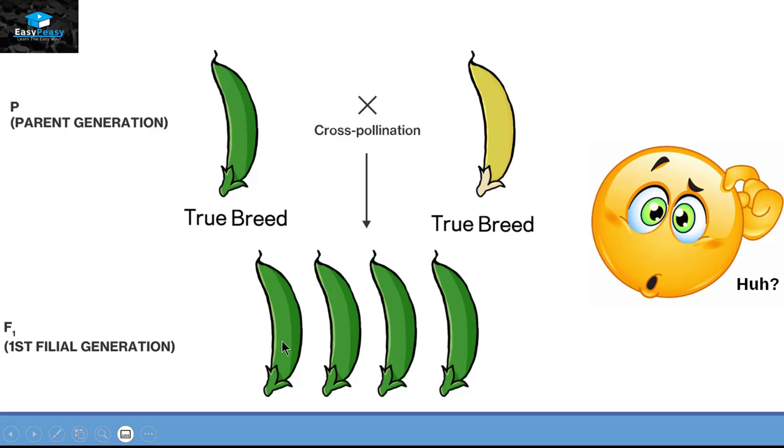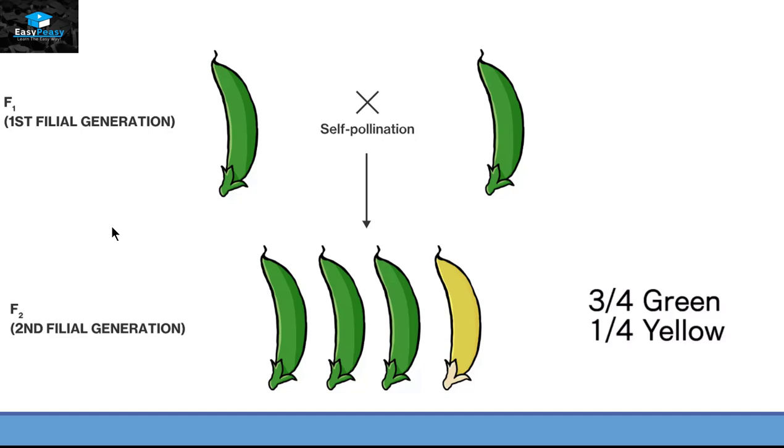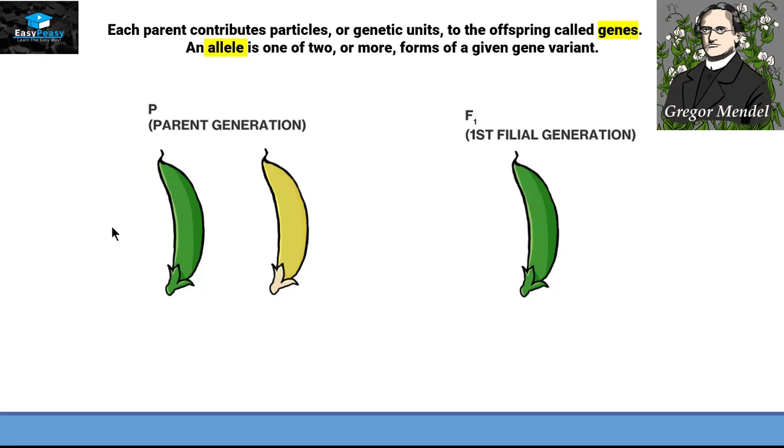Then he took the green pod from first filial generation and did the self-pollination with it. As a result, the second filial generation shows that out of four plants, three plants have green pods but one plant have yellow pods. With this experiment, Mendel concluded that each parent contribute particles or genetic units to the offsprings called genes.